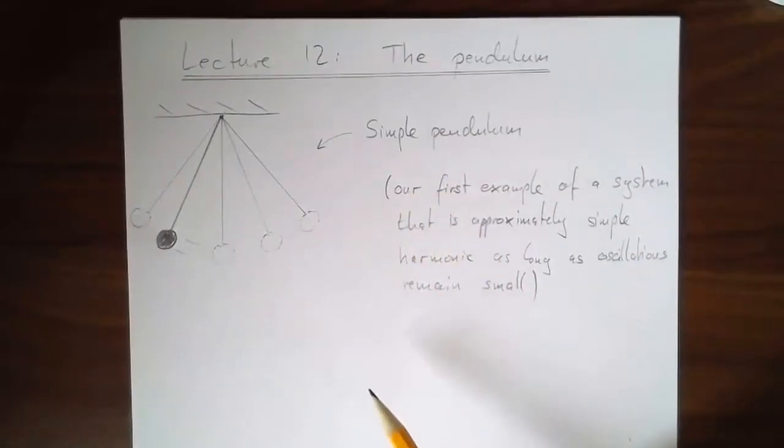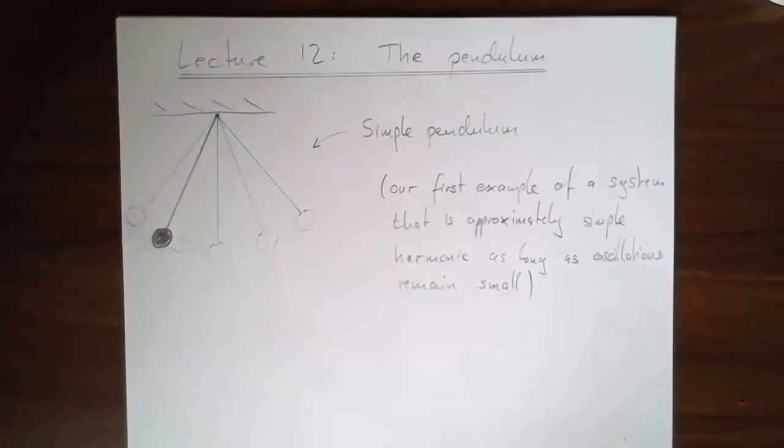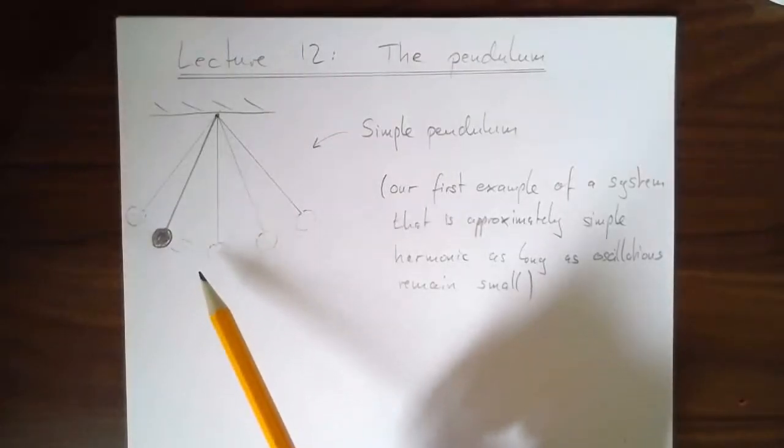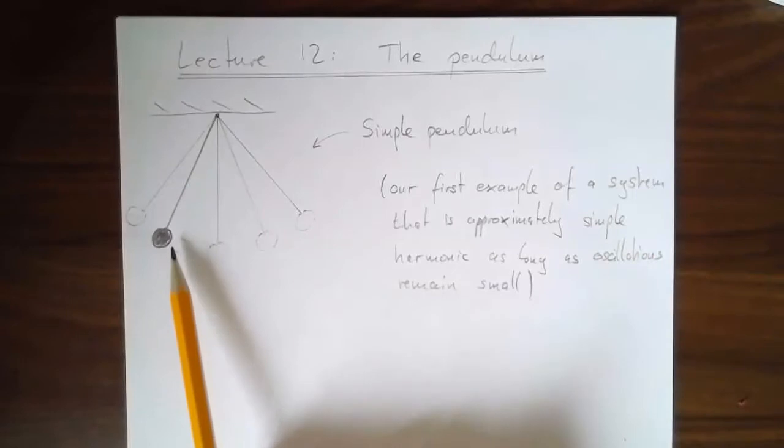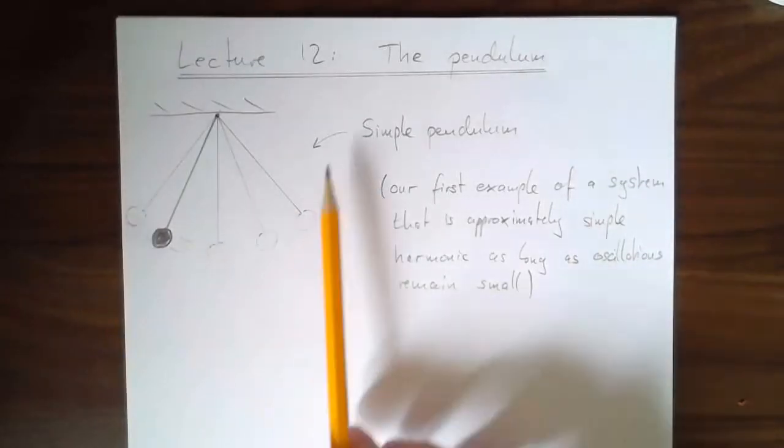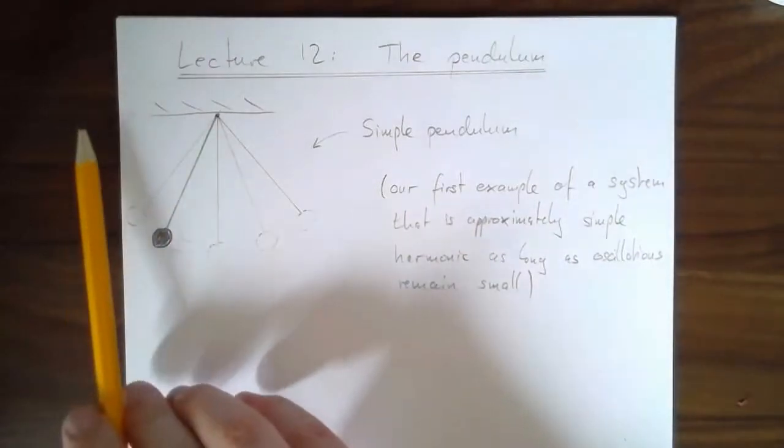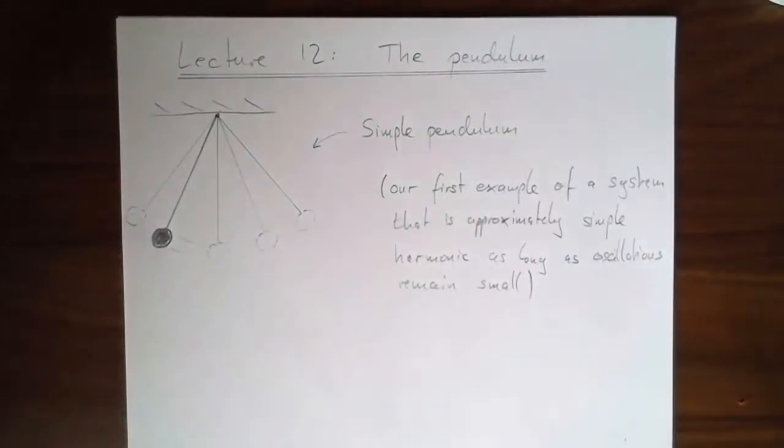Now the pendulum is going to be our first example of a system which is not a mass on a spring, and it is our first example of a system that is going to undergo simple harmonic motion approximately, so not exactly, we're going to make an approximation in our analysis of this system. But that approximation will be good. It will be almost exact, provided the motion of the oscillation remains small. So in the case of the pendulum, it means that it doesn't swing too far left and right. If it swings all the way to like 90 degrees horizontal, that's a big oscillation, but if you imagine it just swings a little bit back and forth, then our approximation will be good.